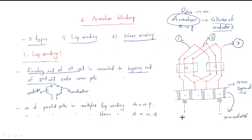The finishing end of the first coil is connected to the beginning end of the second coil under the same pole (north pole). The finishing end of the second coil is connected to the beginning end of the third coil. When the arrangement is like this, we call it lap winding. One conductor is in one pole and another conductor is in the other pole for each coil.